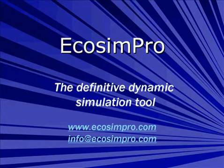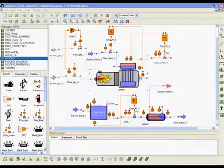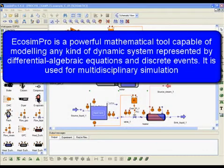EcosimPro, the definitive simulation tool. EcosimPro is a powerful mathematical tool capable of modeling any kind of dynamic system represented by differential algebraic equations and discrete events. It is used for multidisciplinary simulation.